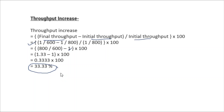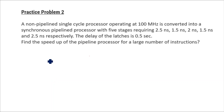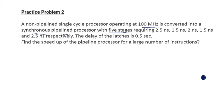So I hope you got it. Let's move to the next question — the second practice problem. A non-pipeline single-cycle processor operating at 10 megahertz is converted into a synchronous pipeline processor with 5 stages requiring delays of 2.5, 1.5, 2, 1.5, and 2.5 nanoseconds. The delay of the latches is 0.5 nanoseconds, meaning register delay is also given. Find the speedup of the pipeline processor for a large number of instructions.